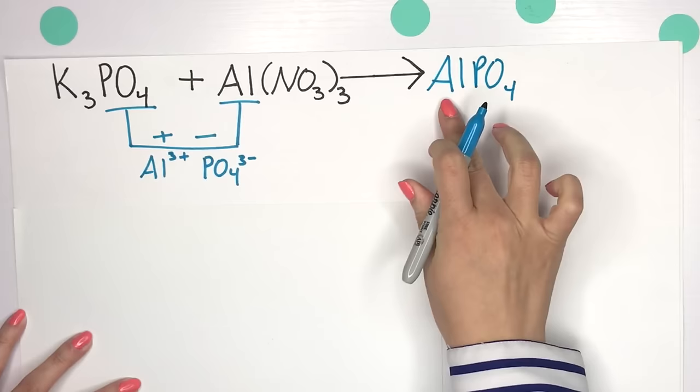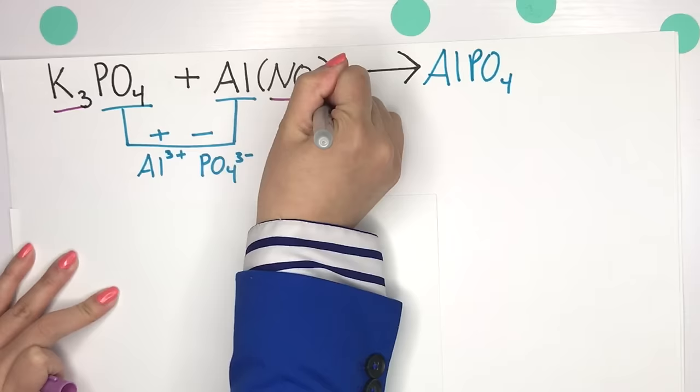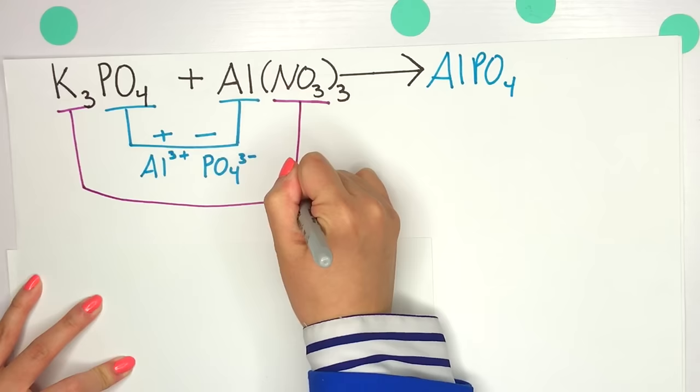That's the inner with the inner. Now, let's look at our outer with our outer. We'll combine these two to form our next product, our next compound.